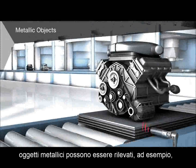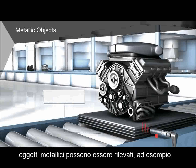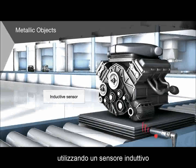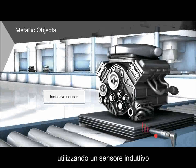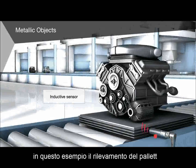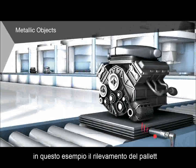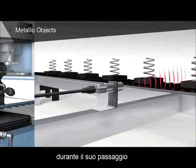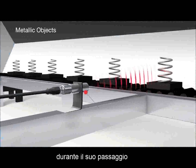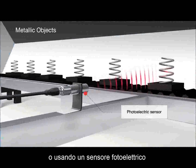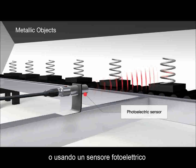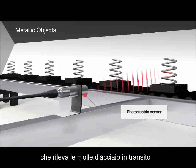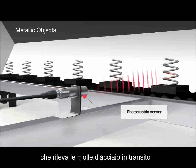Metallic objects can be detected, for example, using an inductive sensor — here seen detecting the workpiece carrier as it passes by — or using a photoelectric sensor, which detects the passing steel springs.